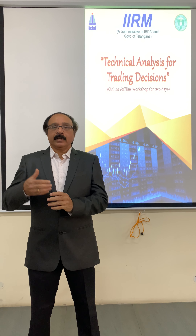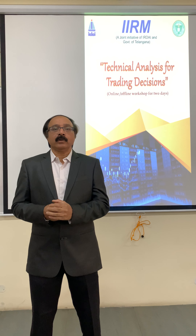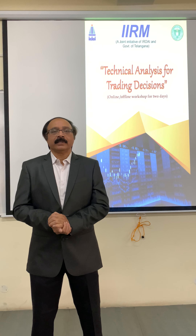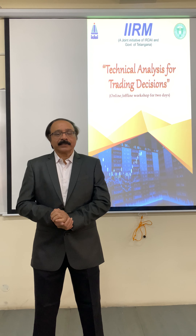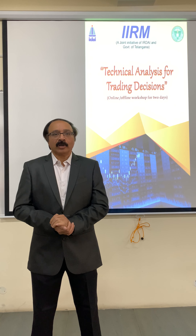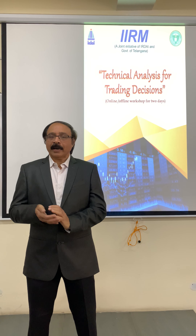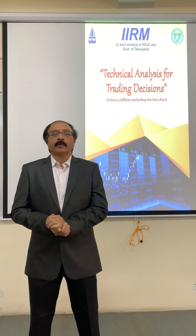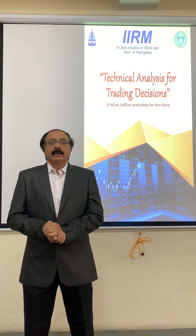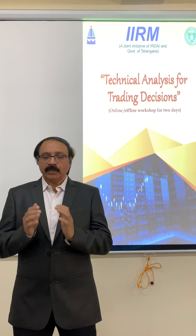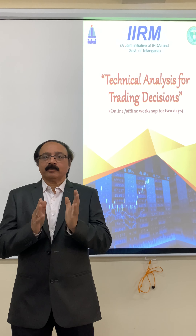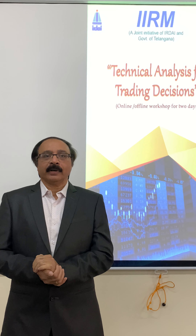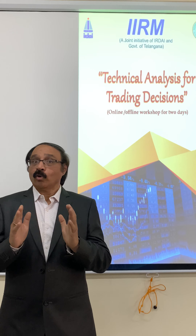Furthermore, oscillators will tell you the overbought or oversold position. We are going to use important oscillators like RSI, Stochastic, Williams Percentage R, Bollinger Band, OBV, Parabolic SAR, and Ichimoku Cloud. All these tools will help you to identify patterns, understand their strength, assess the overbought or oversold position, and make your decisions in a more informed way.